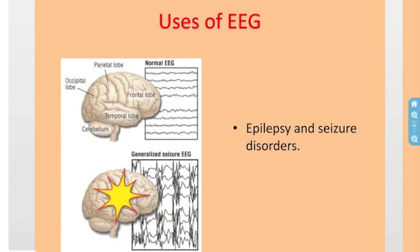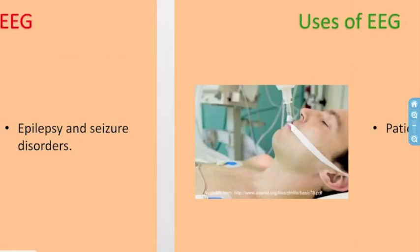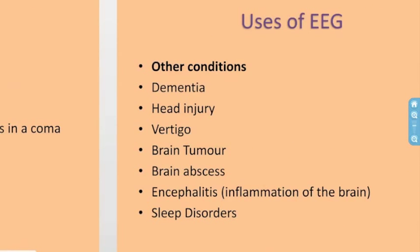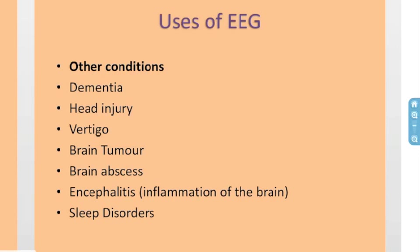Now we're talking about the uses of EEG. In clinical medicine, EEG is mainly used to help diagnose epilepsy and seizure disorders. EEGs can also be used for patients who are in a coma; in this situation the EEG can help determine the severity of brain damage. Other uses also include dementia, head injury, vertigo, brain tumour, brain abscesses, encephalitis, and sleep disorders.